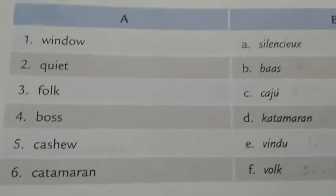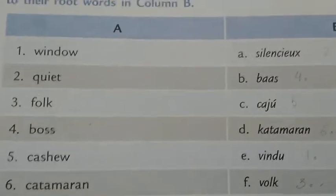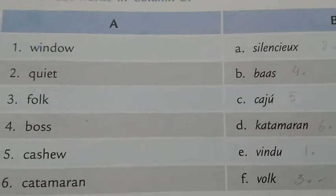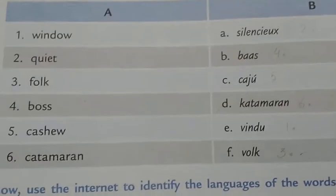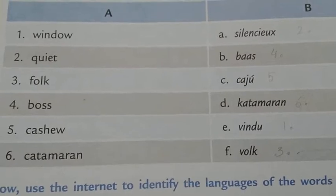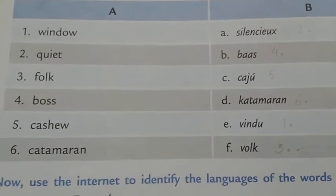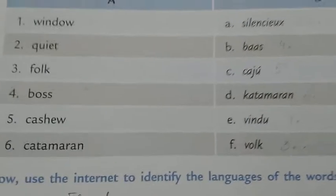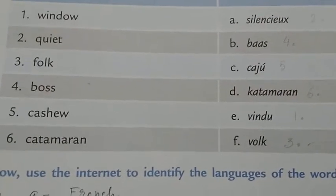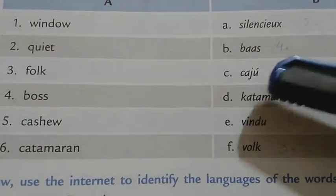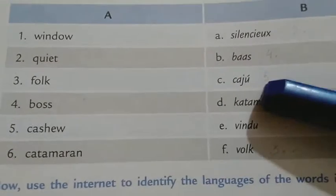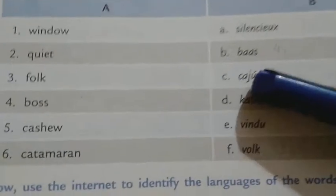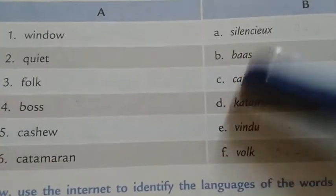Number five is 'cashew.' Cashew is an edible kidney-shaped nut, rich in oil and protein, which is shelled and roasted before it can be eaten. Many of us like to eat cashew nuts. The origin of cashew is 'acaju.' Cashew and acaju sound more or less the same.